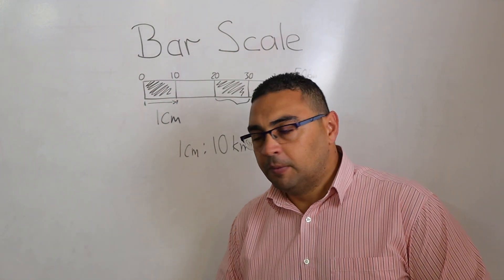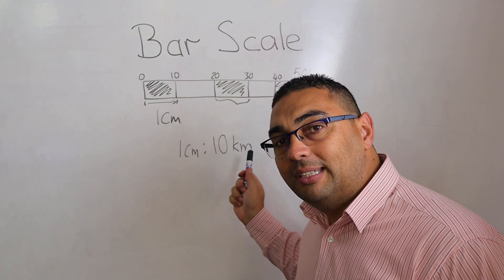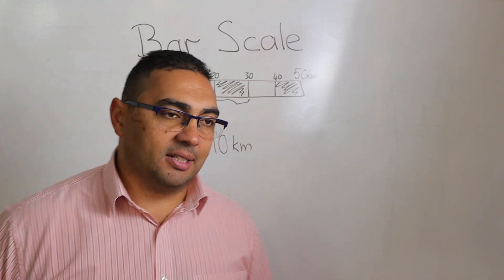And there we go. Now, 1 centimeter that I measure on the map is equal to 10 kilometers in real life. And we term this the actual distance.